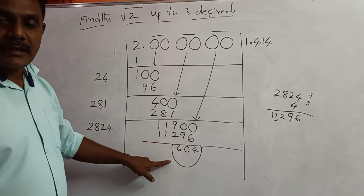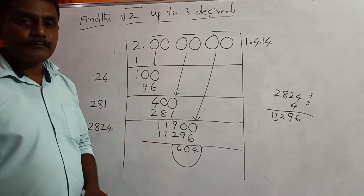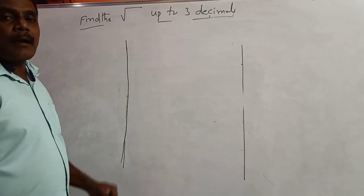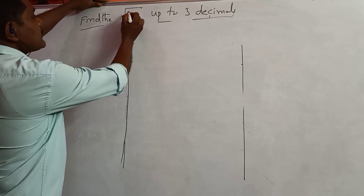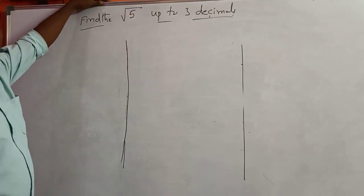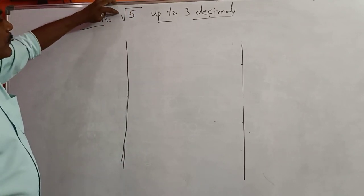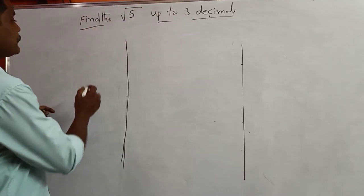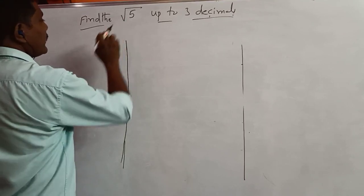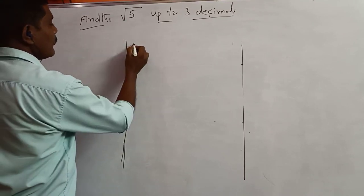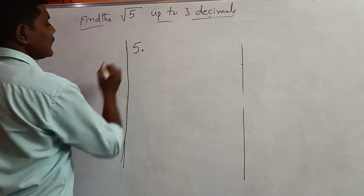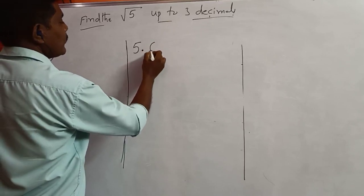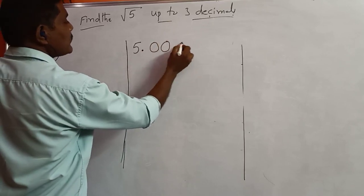This is the required answer. Now I am taking another number which is 5. I am going to find the square root of 5 up to 3 decimals. So we put 5 here, then we put the decimal. Since we have to find up to 3 decimals, we write down here 3 pairs of zeros.